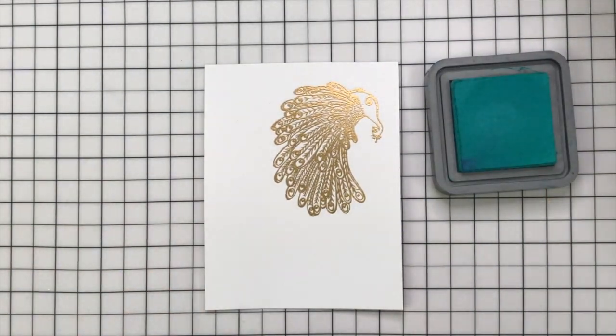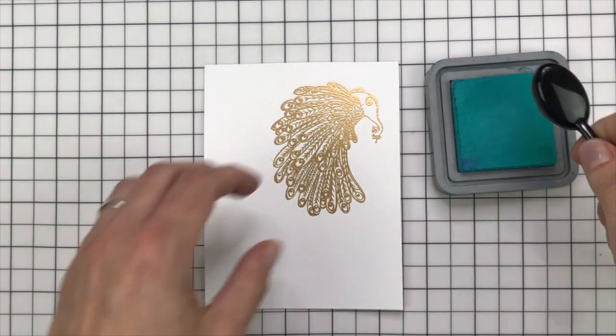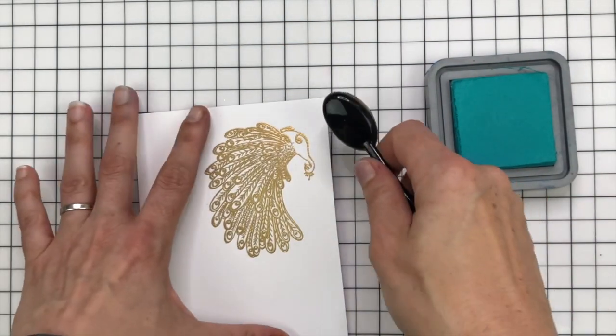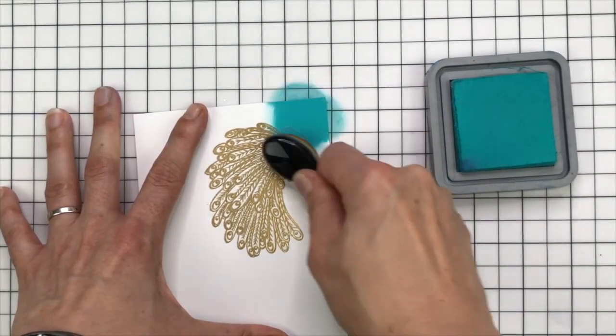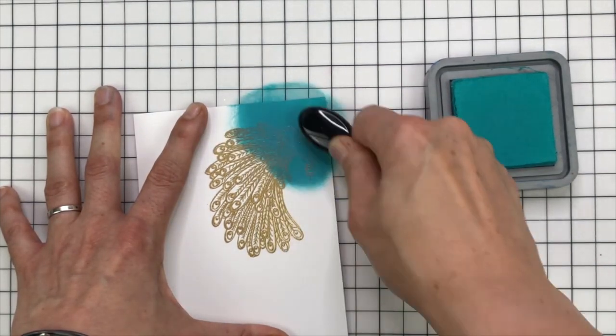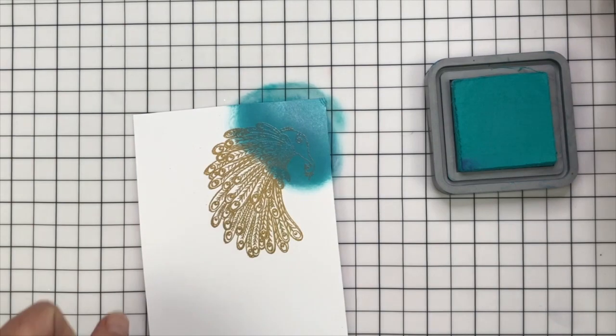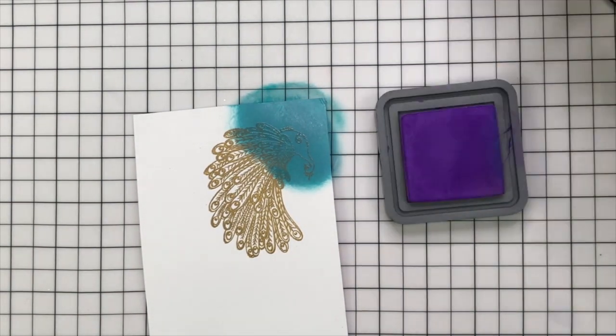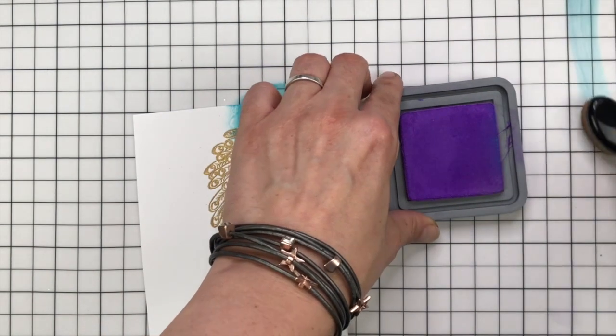Now for my ink colors, I'm going to use the same on both cards. I'm using Distress Oxides. This first one is Peacock Feathers because of course it is. And these blend beautifully. I'm just using ordinary white cardstock from the box here and I'm using a blender brush just to blend it. You'll see it completely coats the embossing powder but that's okay. You'll see what we do at the end here.